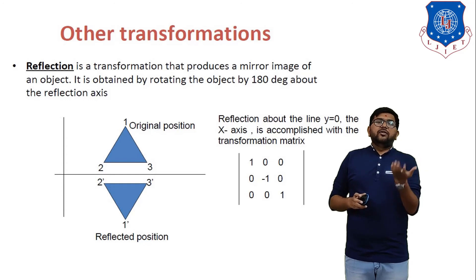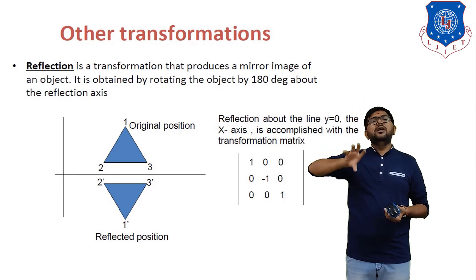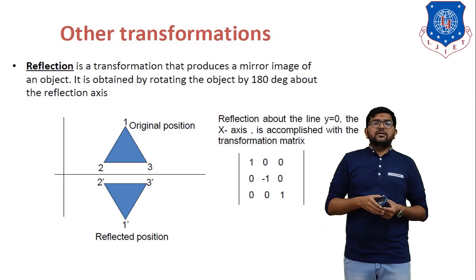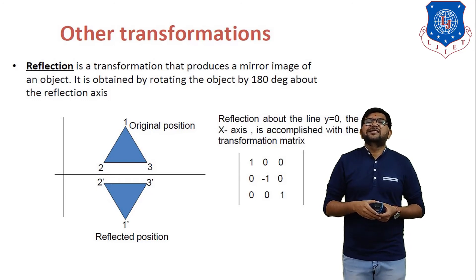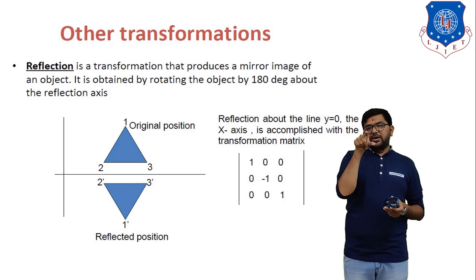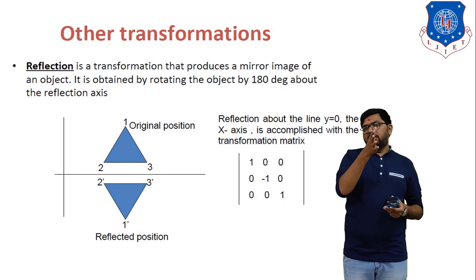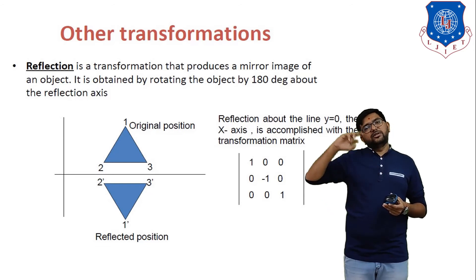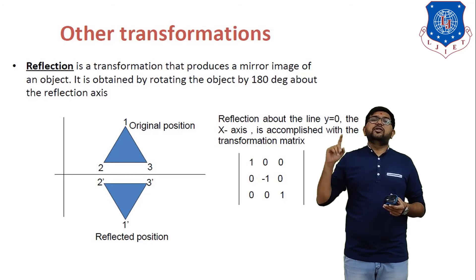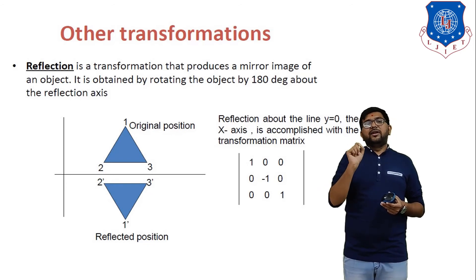Now other transformations — reflection about the X-axis. If we have any object in the first quadrant and find reflection about the X-axis, the reflected coordinates are generated in the fourth quadrant. Reflection produces a mirror image of the object, obtained by rotating it 180 degrees about the reflection axis. Original triangle positions are 1, 2, 3 and reflected positions are 1', 2', 3'. The homogeneous matrix for reflection about the X-axis (in 3×3 form) is [1,0,0 / 0,−1,0 / 0,0,1]. The −1 is because in the fourth quadrant the Y-axis is in the negative direction.